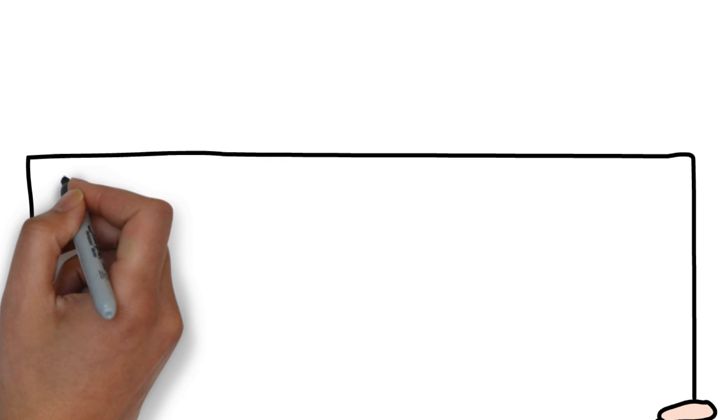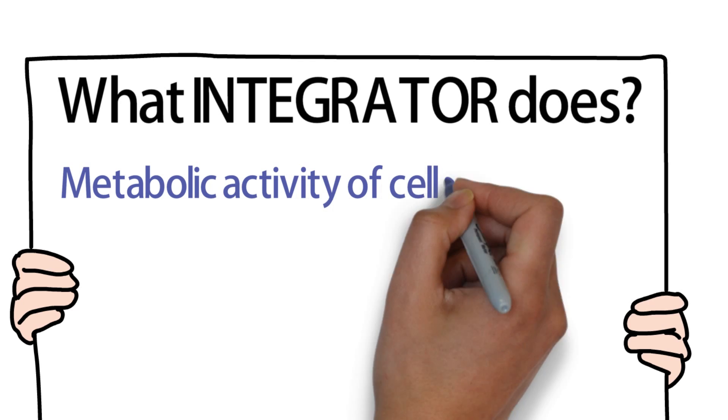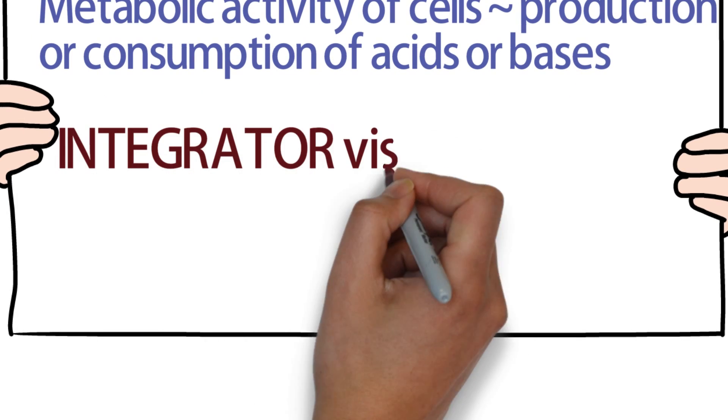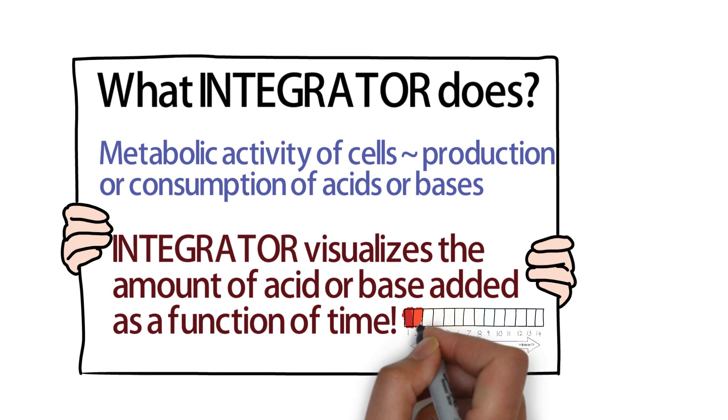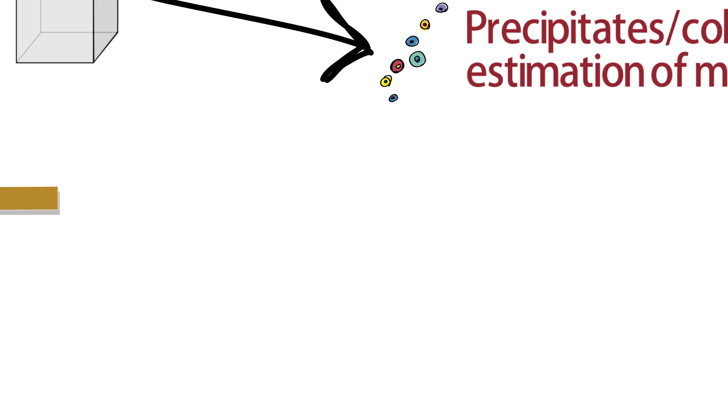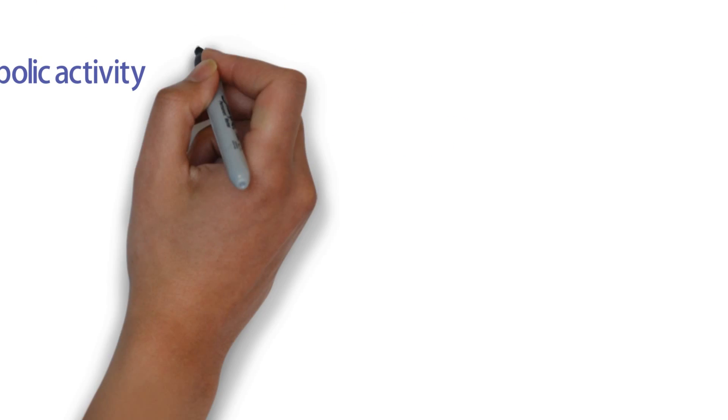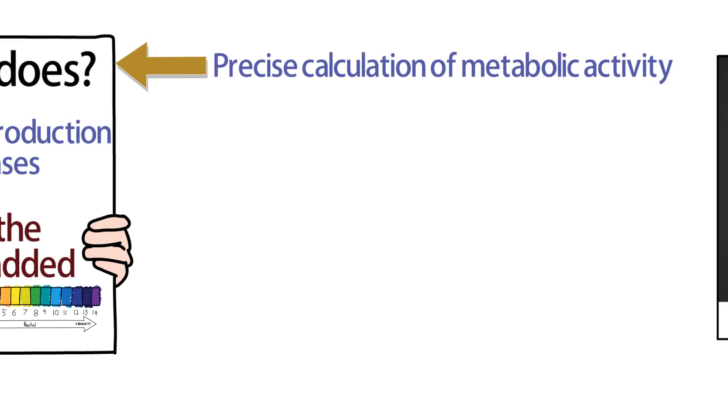How does the integrator overcome the disadvantages of OD measurement? Metabolic activity of cells is related to production or consumption of acid or base. The integrator visualizes the amount of acid or base added as a function of time. Metabolic activity can be measured with much better precision. The integrator provides important information about culture growth, its kinetics, and time of completion.